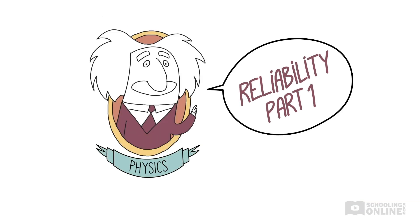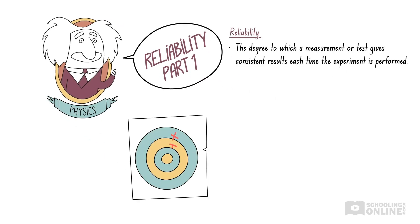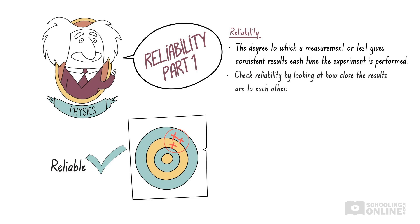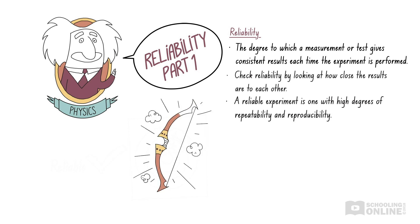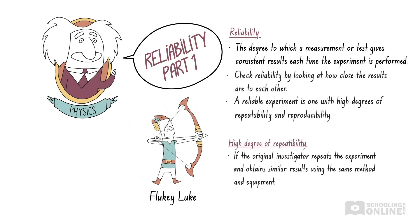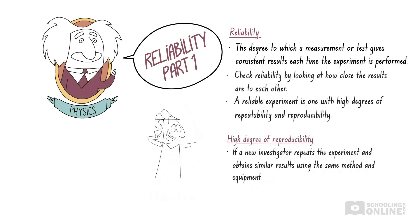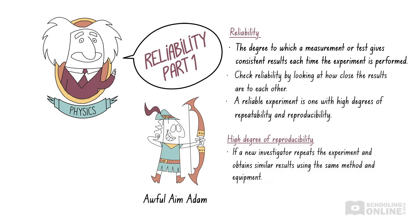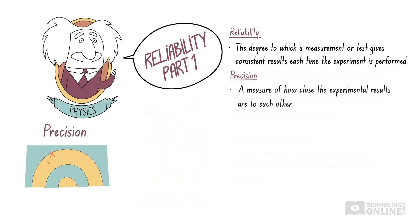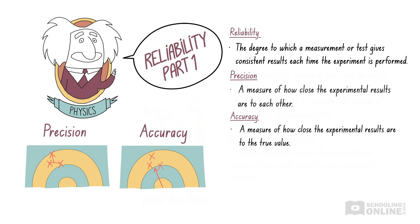Let's revise what we've discussed in this video. Reliability is the degree to which a measurement or test gives consistent results each time the experiment is performed. We can check if the results of an experiment are reliable by looking at how close the results are to each other. A reliable experiment is one with high degrees of repeatability and reproducibility. An experimental procedure is repeatable if the original investigator repeats the experiment and obtains similar results using the same method and equipment. Precision is a measure of how close the experimental results are to each other — this is different to accuracy, which is a measure of how close the experimental results are to the true value.